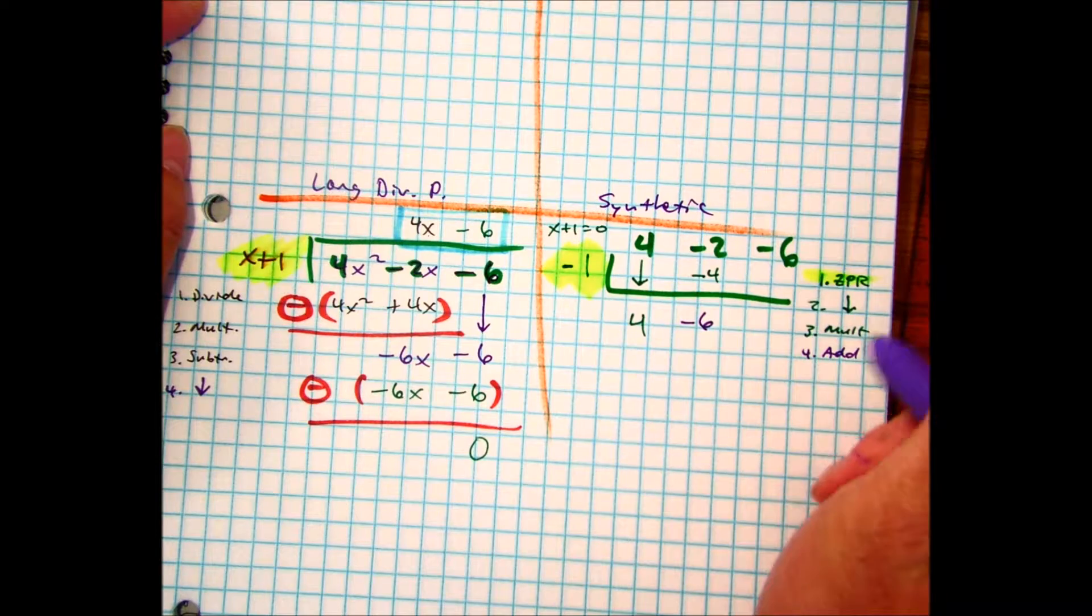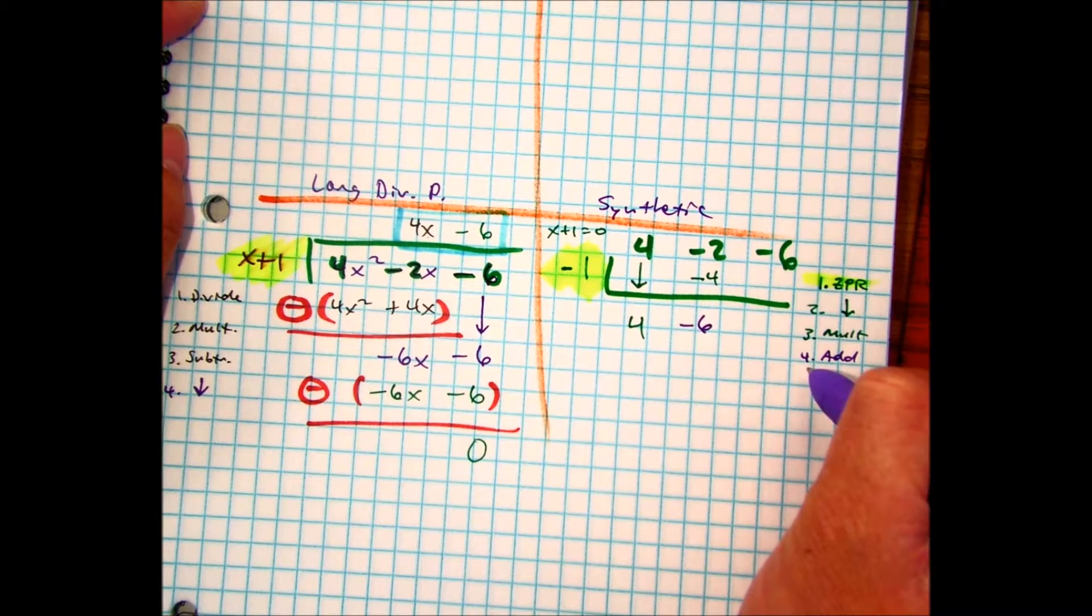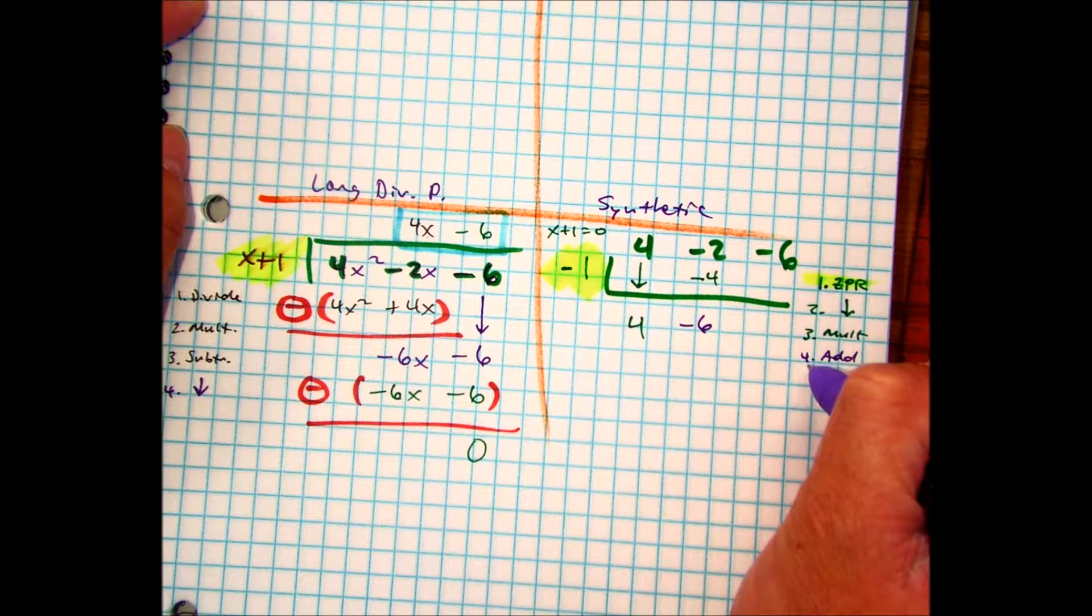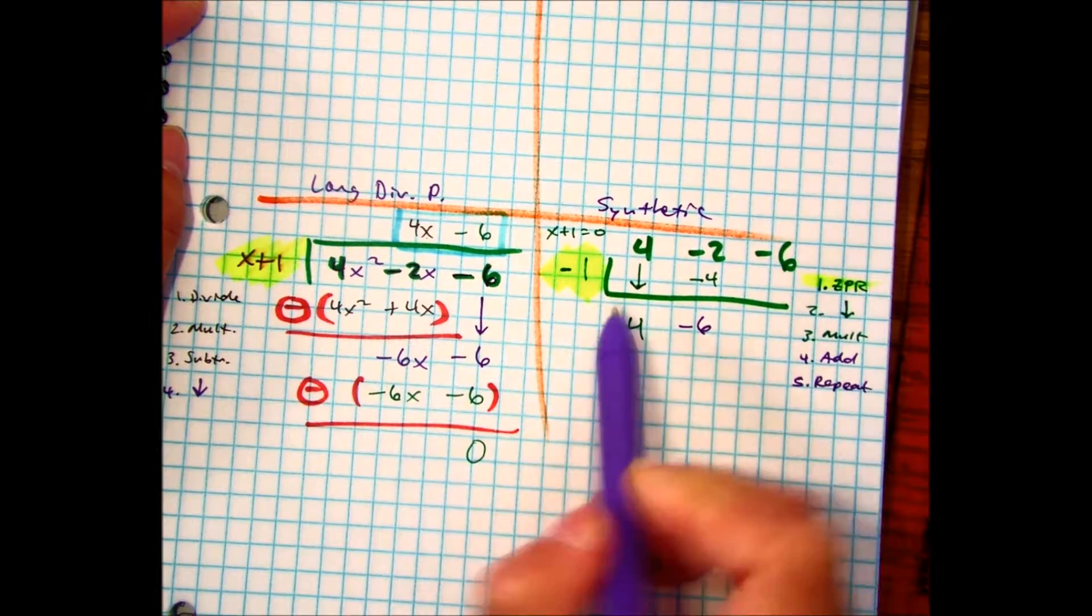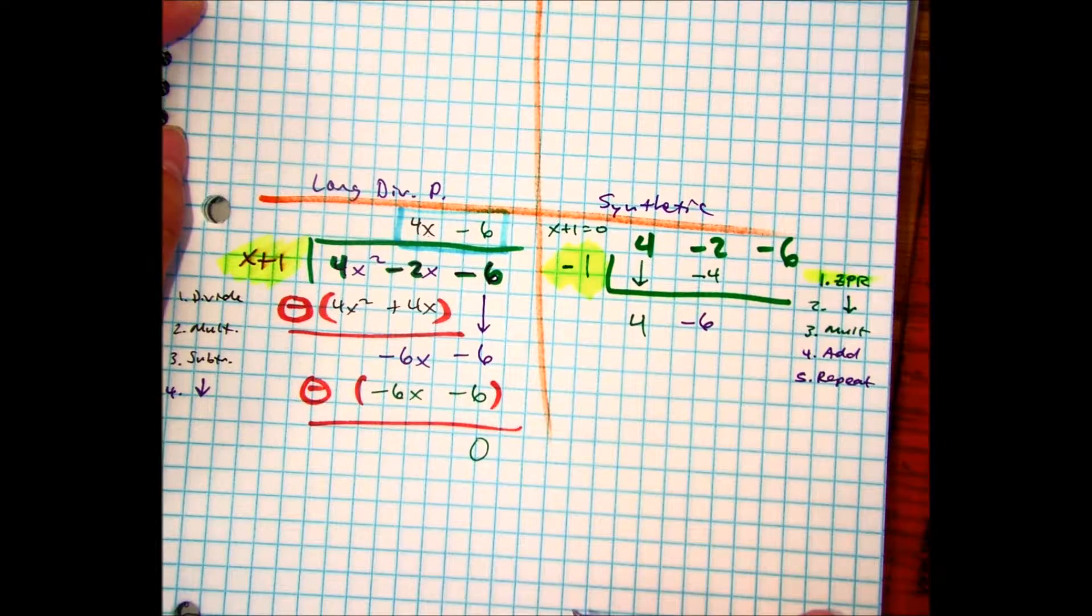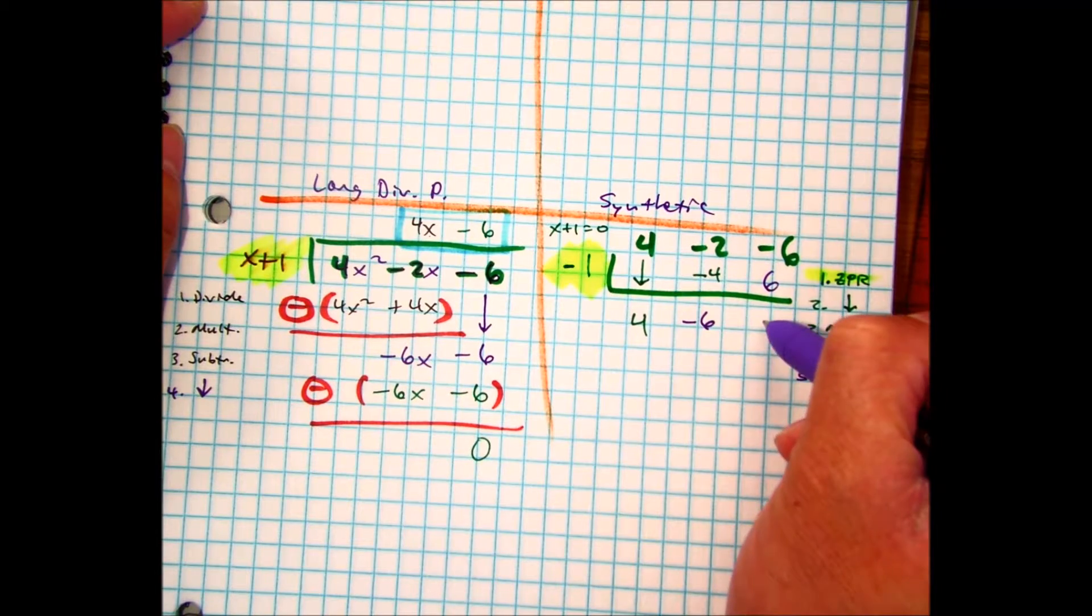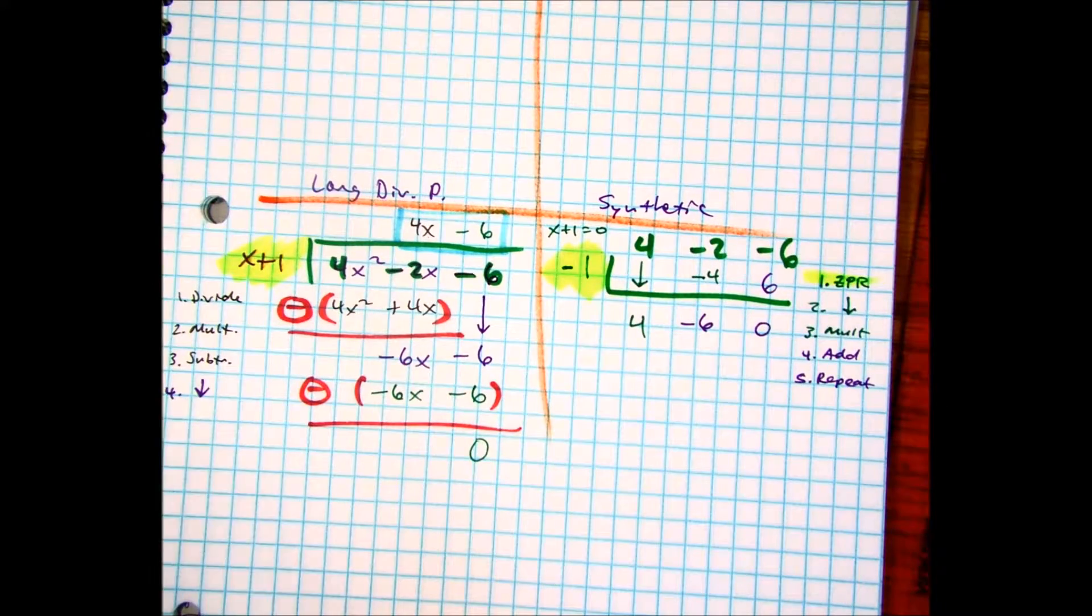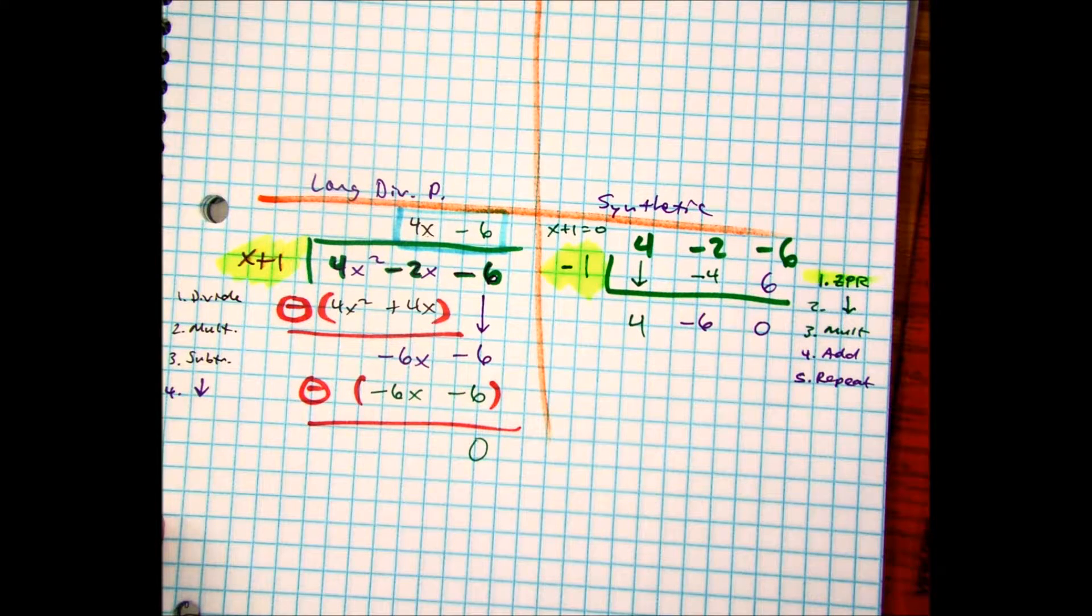And then you just repeat. Just repeat. What's the right? Repeat. Negative 1 times negative 6. And then you're going to add. So you get what? Zero. Okay. This is what I want to know. So you can kind of see where this is coming from.